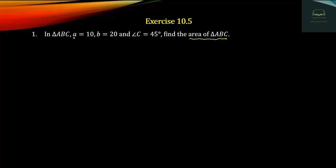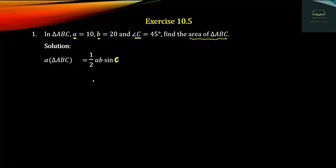To find the area of triangle ABC, we apply the formula. The area equals one-half times a times b times sine of the included angle. So we have one-half times 10 times 20 times sine 45 degrees.